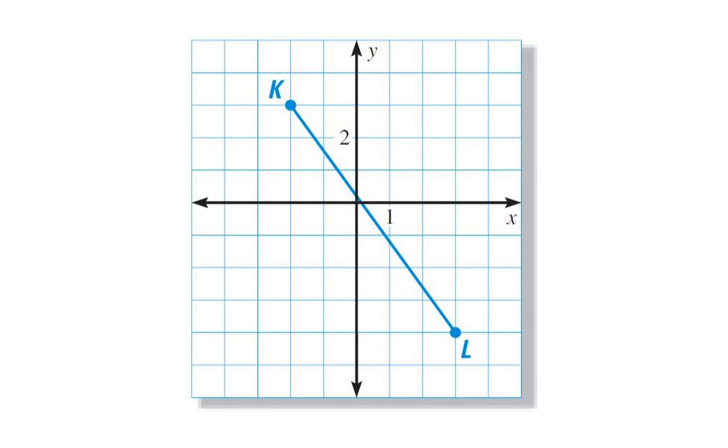Here we're going to reflect segment KL, again, reflecting on the Y axis first. K is two units away from Y, and it needs to be perpendicular. So K prime will get mapped to there. L prime is also three units away, and it needs to be perpendicular. So L prime needs to be here.